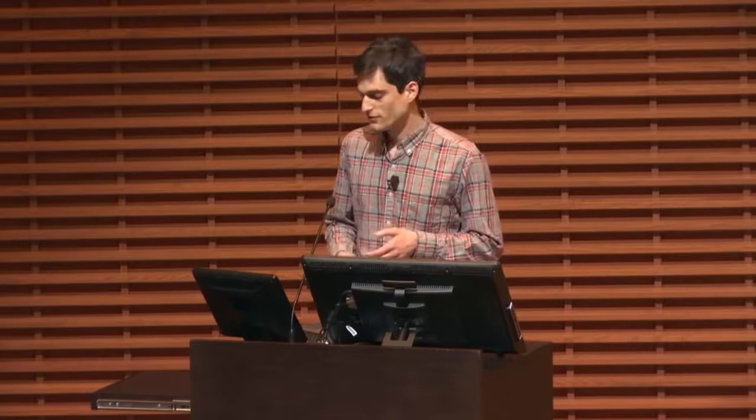What's deep reinforcement learning? It's simply reinforcement learning where you're using neural networks as function approximators. Unlike supervised learning, it's not obvious what to use the neural network to approximate. One choice is to approximate the policy — how the agent chooses actions. Another is to approximate value functions — measuring how good different states or actions are. And last, you can learn a dynamics model making predictions about next states and rewards.